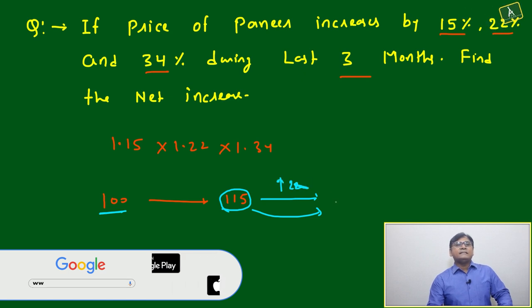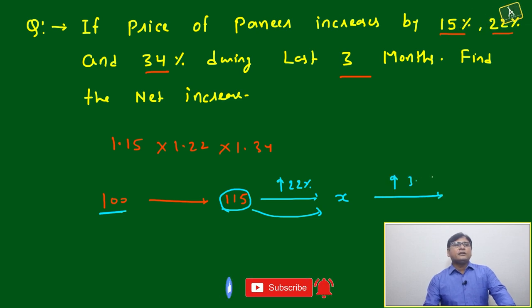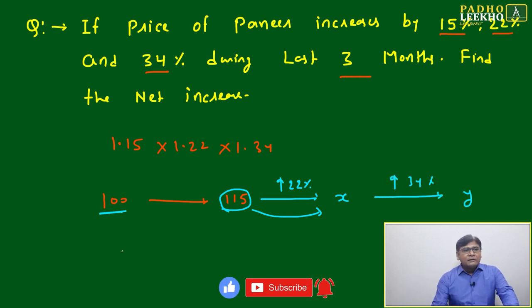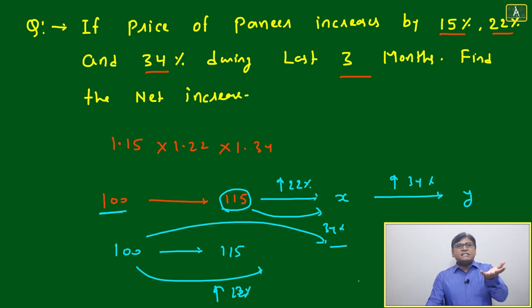The base will keep on changing. Then here we have to put 22% increase, then whatever you get times 34%, then you will get y. You can't calculate like 100 becomes 115, again 100 plus 22%, and again 100 plus 34%. This is wrong. Whatever your change has happened, the next change will be measured based on the changed value. First base is 100, second base is 115, and third base will become x. So directly we can multiply 1 into 1.15, 1.22, 1.34.